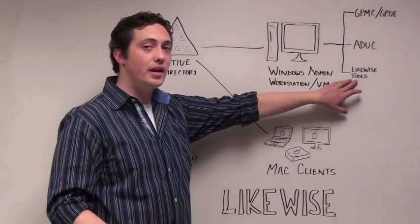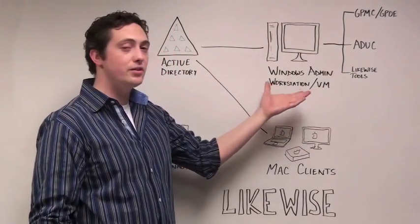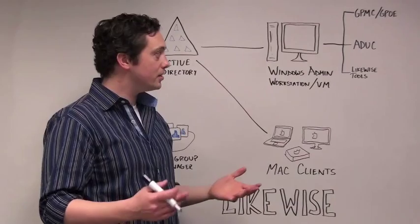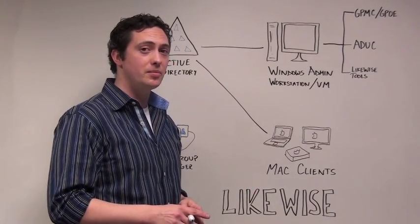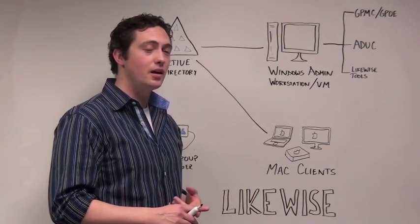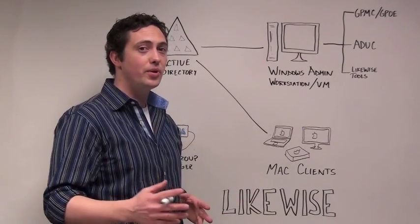Next, you're going to install the Likewise Enterprise tools on your Windows Administration Console. This is going to give you access to all the vast tools available to you in Likewise Enterprise, including an event log, auditing tools, and reporting console.